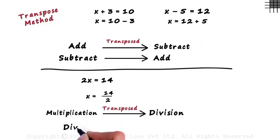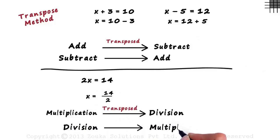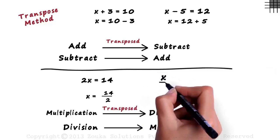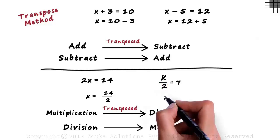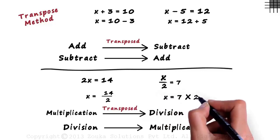Similarly, a term that is divided on one side is multiplied when transposed to the other side. Consider this equation: x divided by 2 equals 7. We can see 2 is dividing the left hand side, so we transpose it to the other side by multiplying the right hand side by 2. We get x equals 7 multiplied by 2.